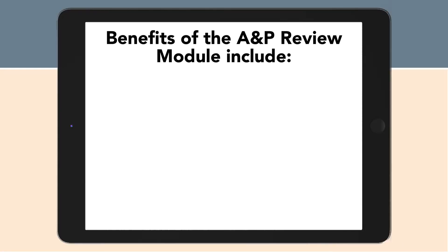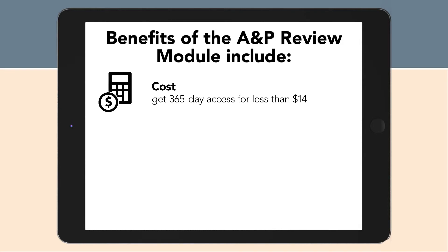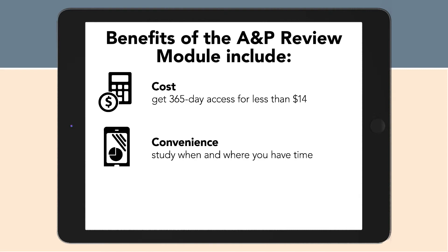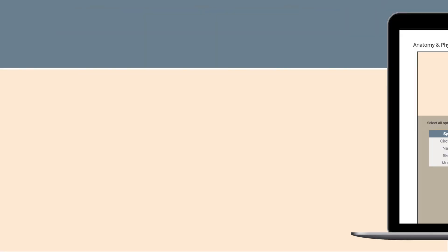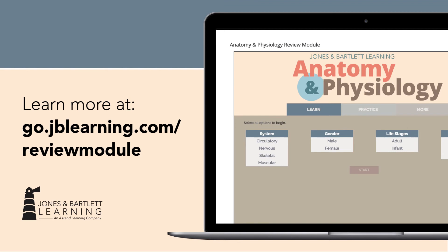Benefits of the A&P Review Module include: Cost – get 365-day access for less than $14. Study when and where you have time. Learn with interactive definitions or quiz yourself on your current knowledge. Learn more at go.jblearning.com/reviewmodule.